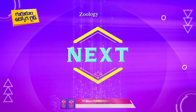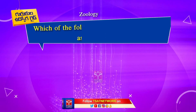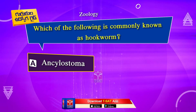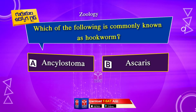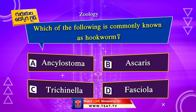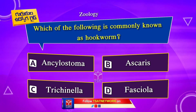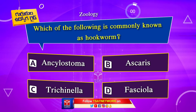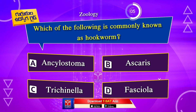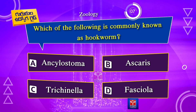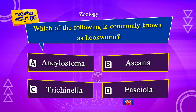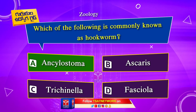Next question. Which of the following is commonly known as hookworm? Option A. Ancylostoma. Option B. Ascaris. Option C. Trichinella. Option D. Fasciola. The correct answer is Option A. Ancylostoma.